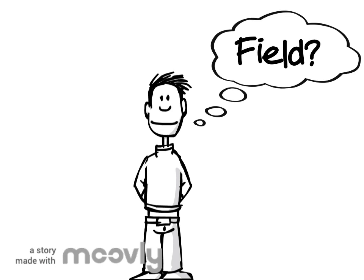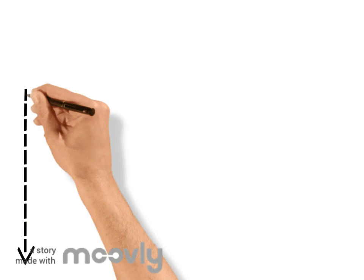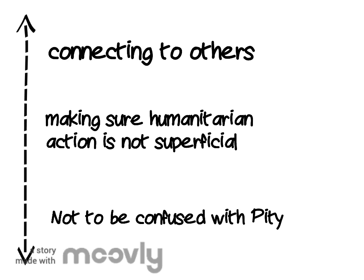Here are three very important concepts. Concept one: compassion. Compassion is about connecting to others. It means creating meaningful connections with those you are working with and making sure humanitarian action is not superficial. It should not be confused with pity.